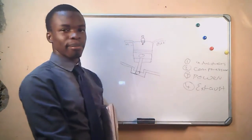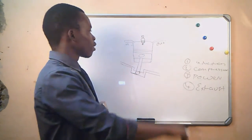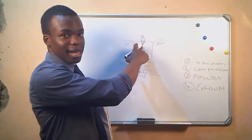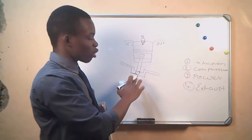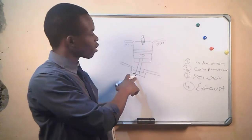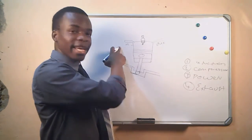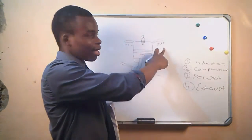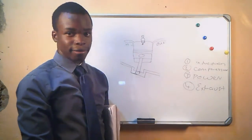This is the example of a petrol engine. We have a cylinder, and a piston that is connected to a crankshaft. We have two valves, which are the inlet valve and the outlet valve, and we have what we call a spark plug.